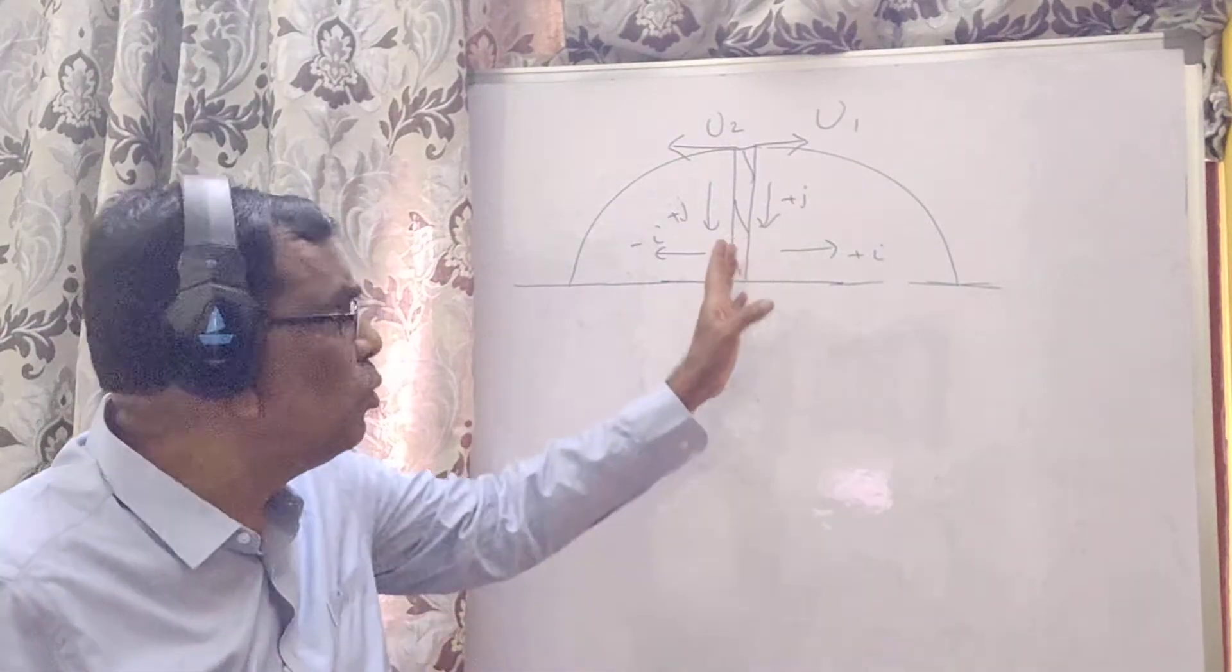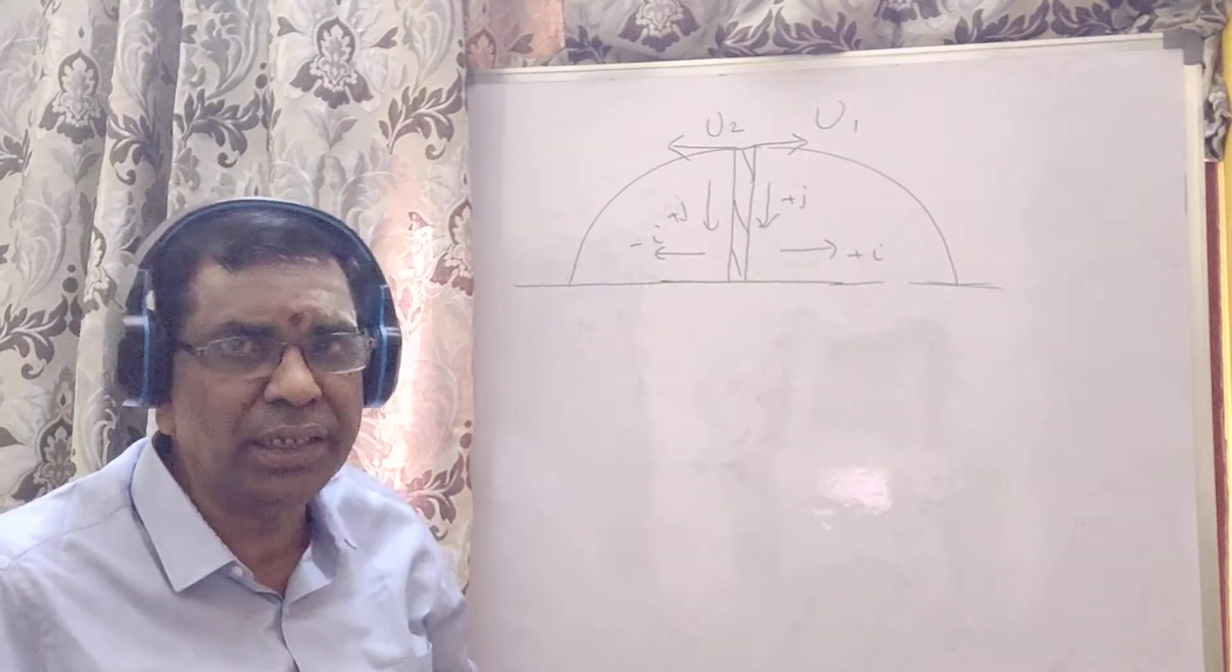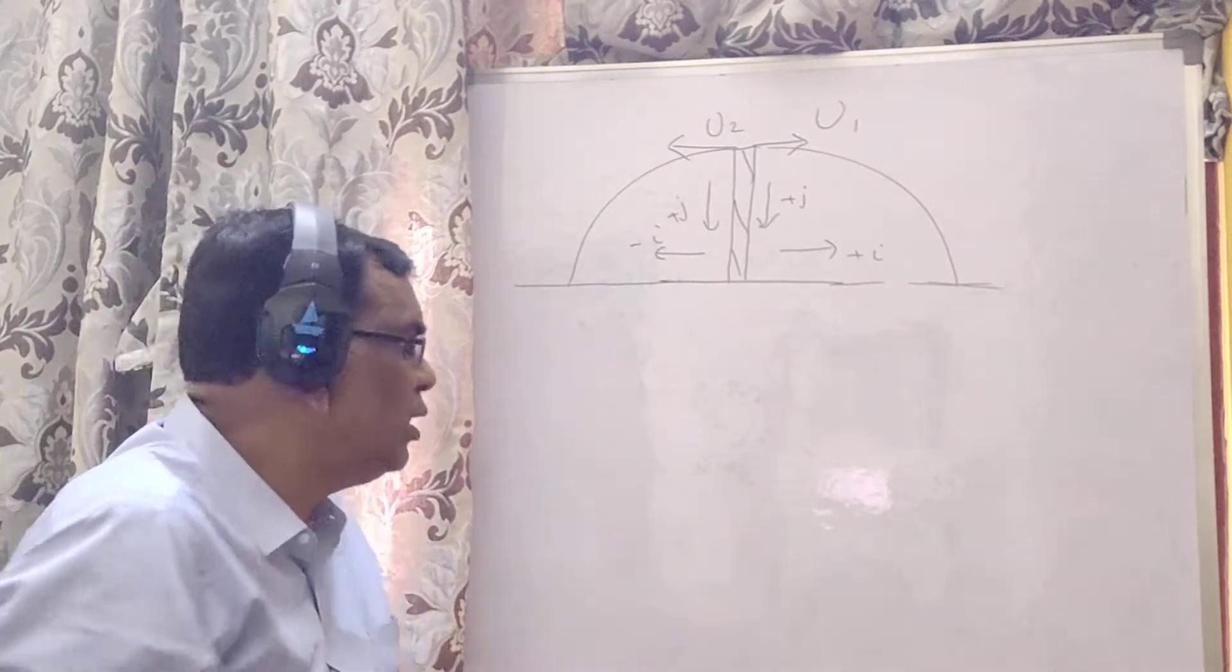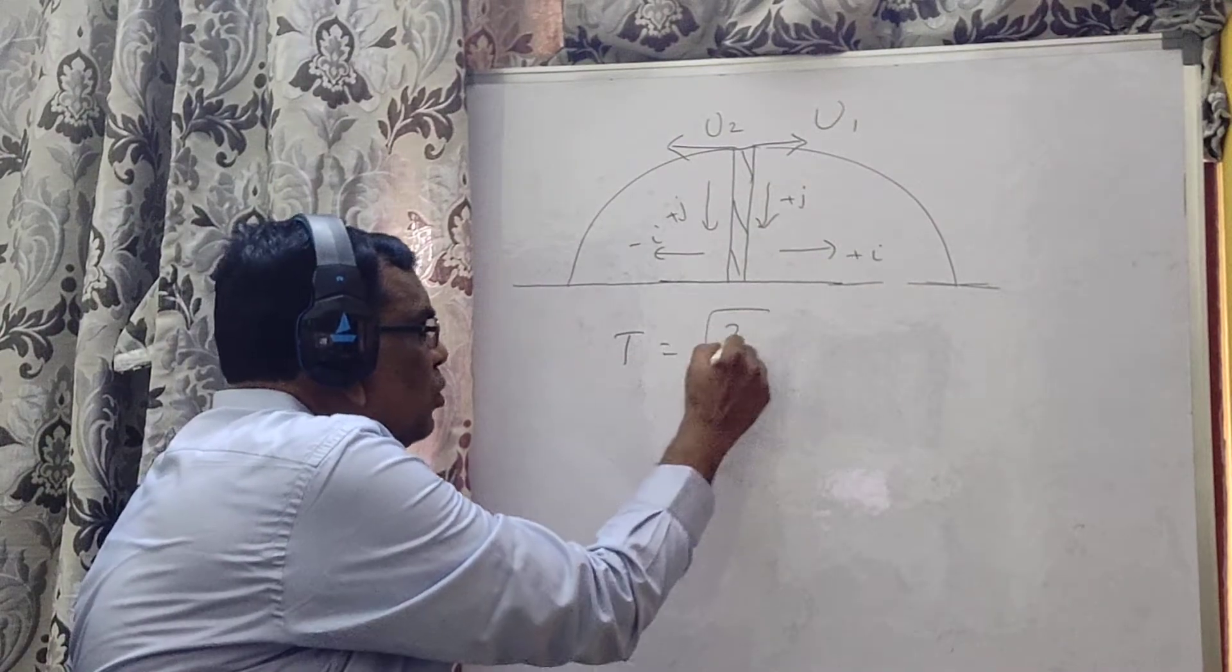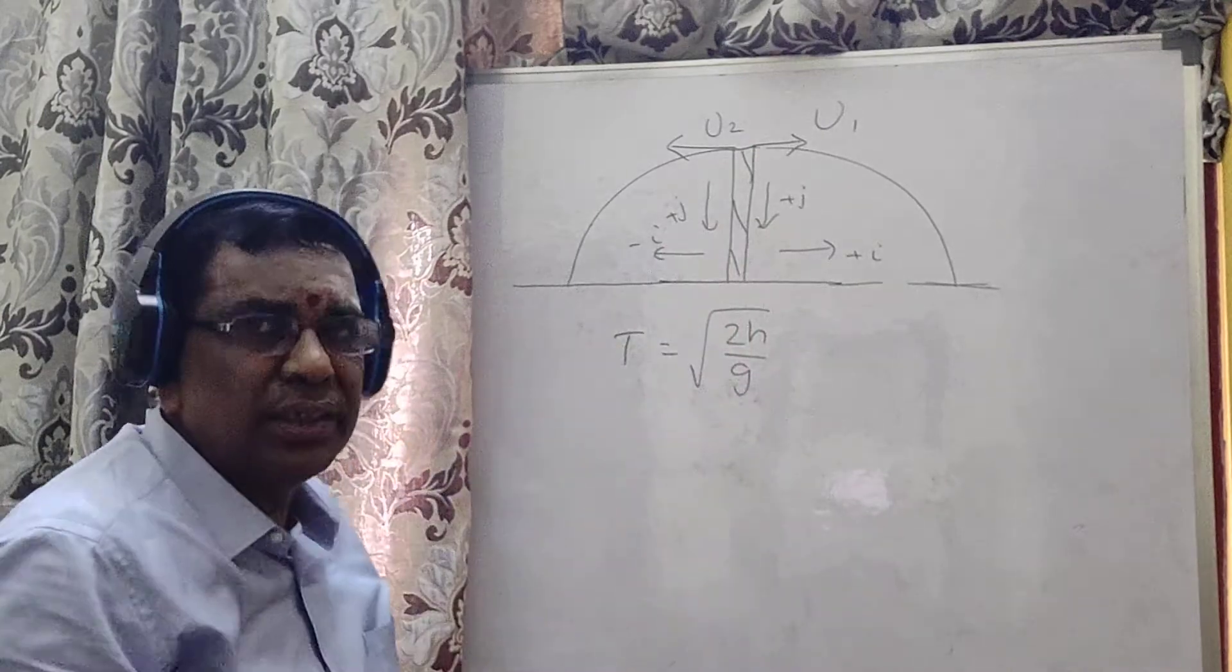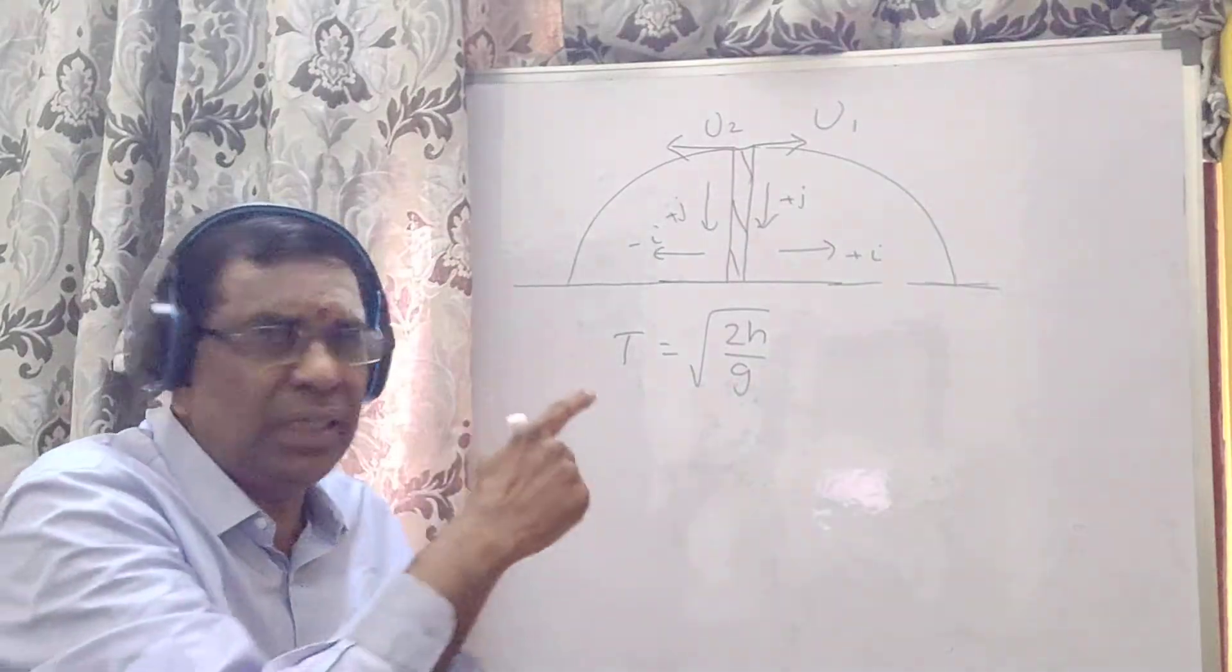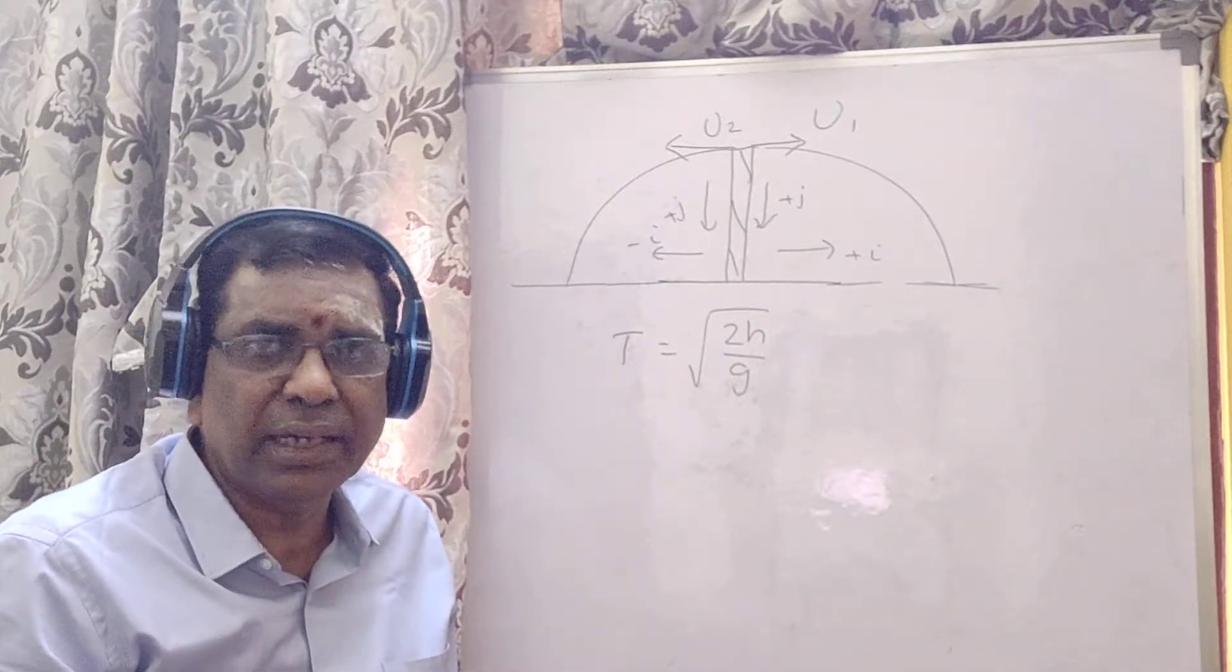Now, when you try to project the particle from the top of a tower horizontally, the other day we saw the time of flight is under root 2h by g, where h is the height of the tower. I think in the previous lecture probably I forgot to put the square root. I think you can make a correction in that.